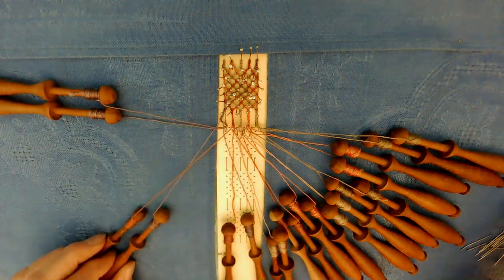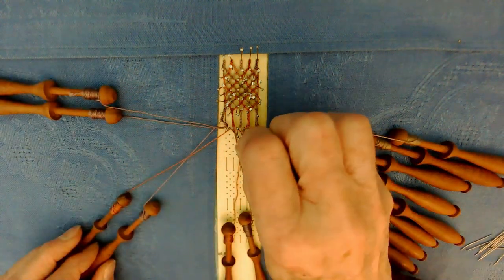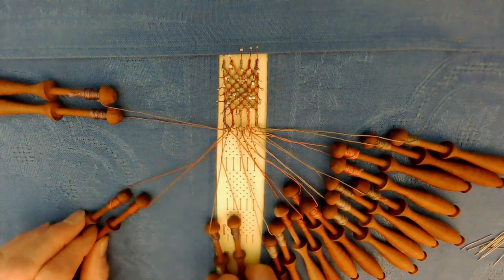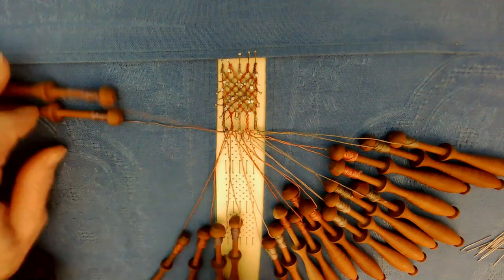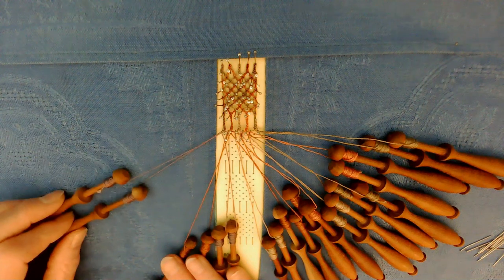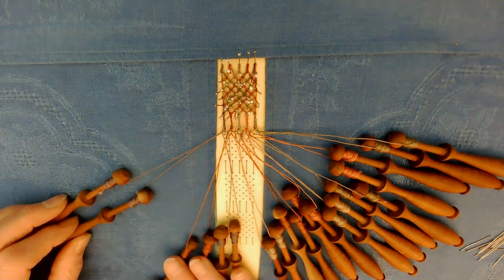The next pair: cross, twist, pin, cross, twist, twist. The last pair, we don't use in this row, but we do put two twists on it, so it's not quite so messy as it's moving down.